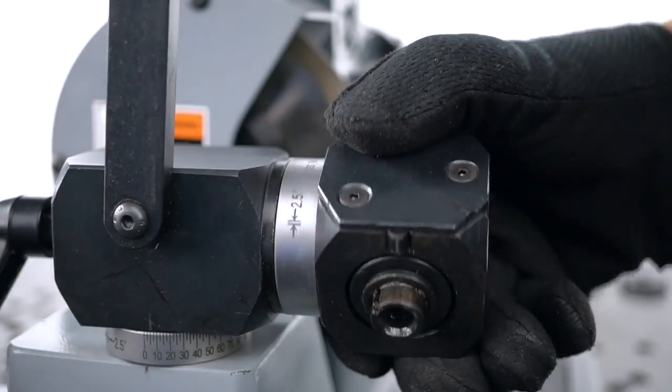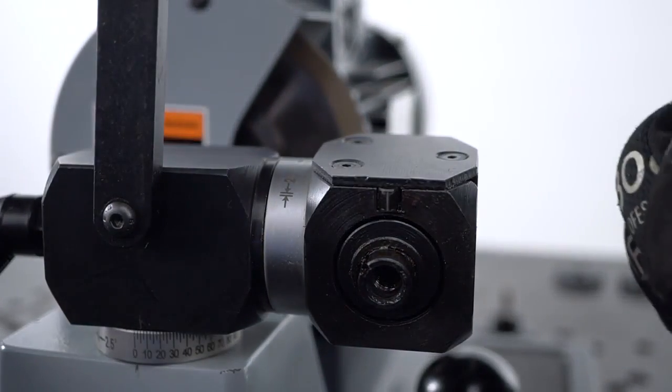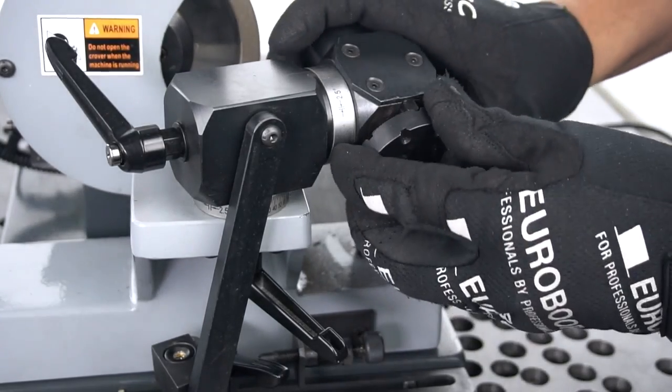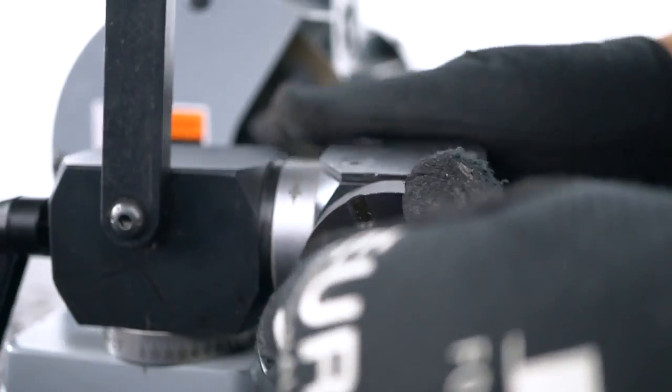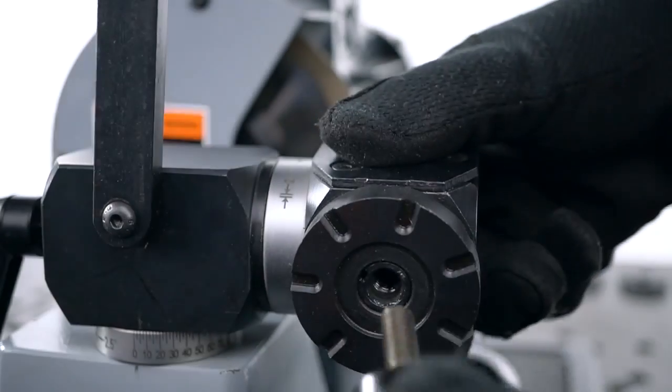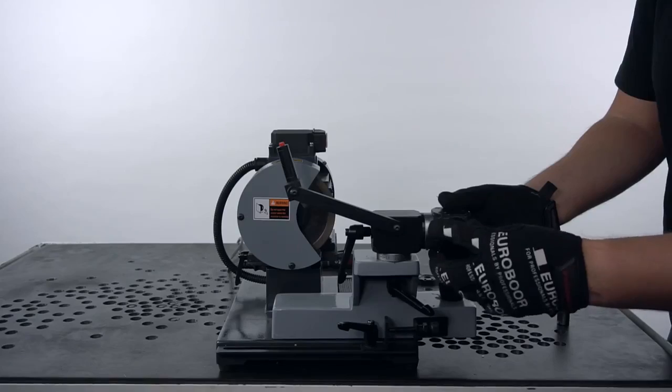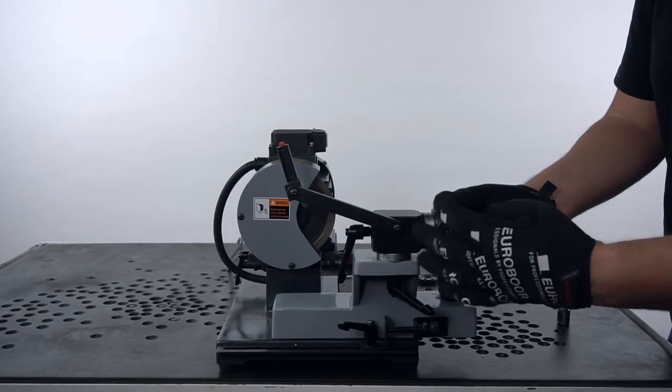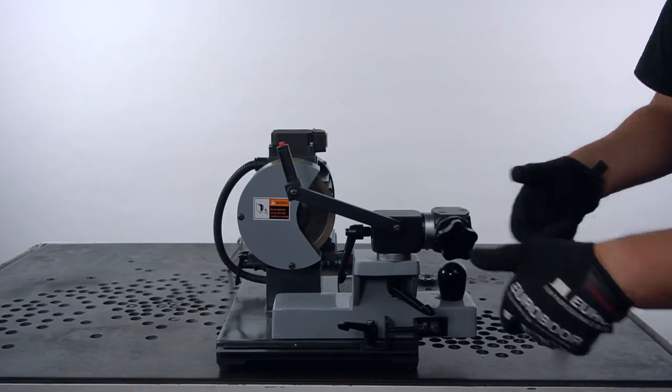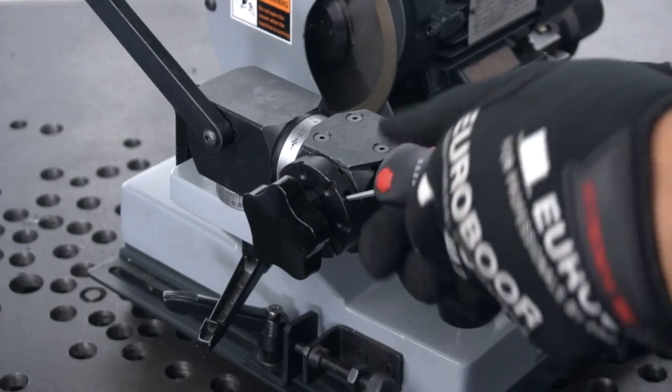Place the selected index plate on the back of the cutter holder. Make sure the side with the correct amount of slots goes facing the holder. Fasten it first with the star wheel. Then tighten the screw inside the index plate.